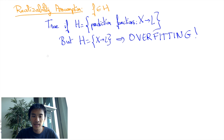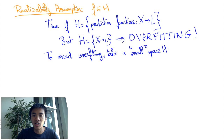A basic way, among many others, to implement this idea is to consider a small hypothesis class, although the cardinality of the hypothesis is not always the right measure of its size. Instead, the concept of VC dimension, which I shall mention in another video, can be argued to be much more relevant, at least in some settings. In any case, doing so allows to prevent overfitting.